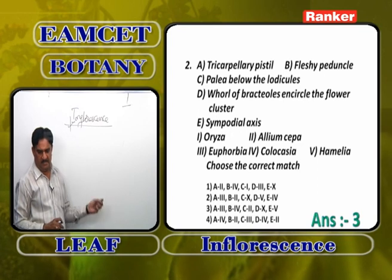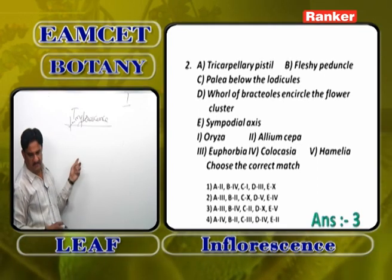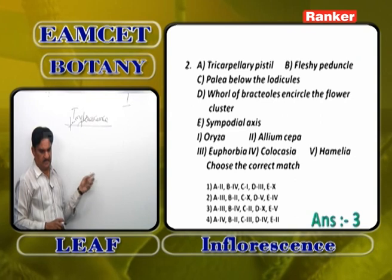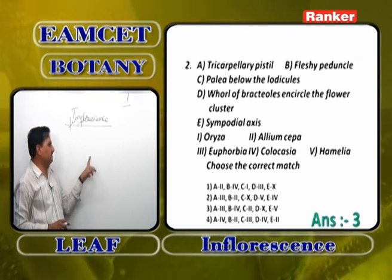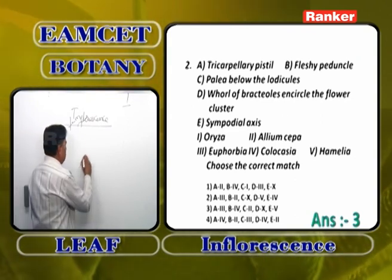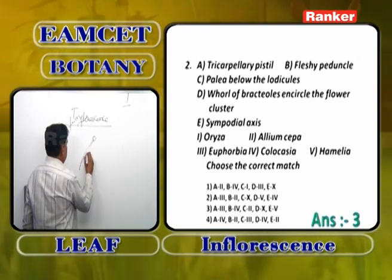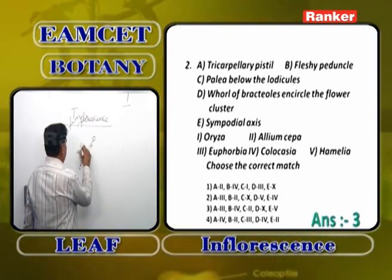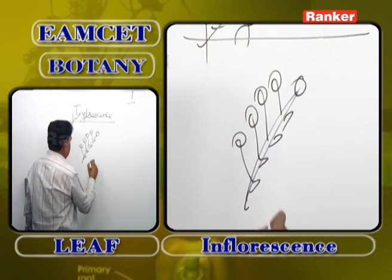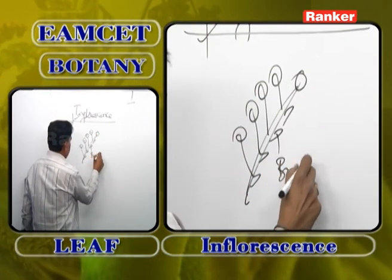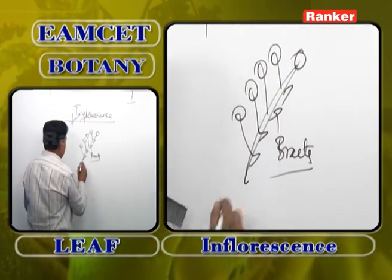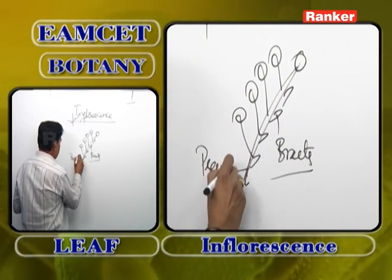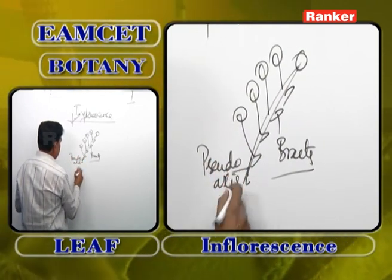Sympodial axis is found in heliotrope because the inflorescence is monochasial helicoid cyme: peduncle growth definitely ends as a flower, flowers are produced in a spiral manner from the lower side, but flowers are not formed in the axils of the bracts — they are formed opposite to the bract. Whenever they are formed opposite to the bracts, it is not a real axis but a pseudo axis.